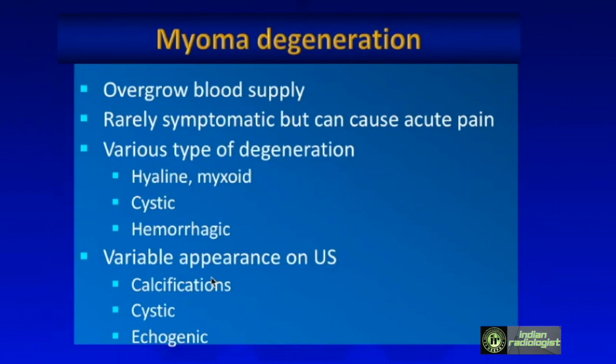Myomas can have atypical appearances, particularly with degeneration. When they outgrow their blood supply, they can undergo hyaline, myxoid, cystic, or hemorrhagic degeneration, resulting in variable ultrasound appearance. They may have calcifications, be cystic, or be echogenic. These are the cases that rarely but sometimes cause acute pain — acute degeneration of a myoma — which can happen in pregnancy in particular. Otherwise, myomas usually don't cause pain, though they can cause vaginal bleeding.